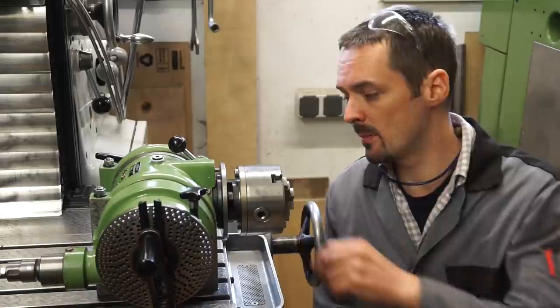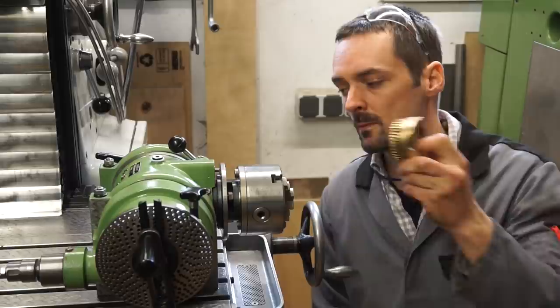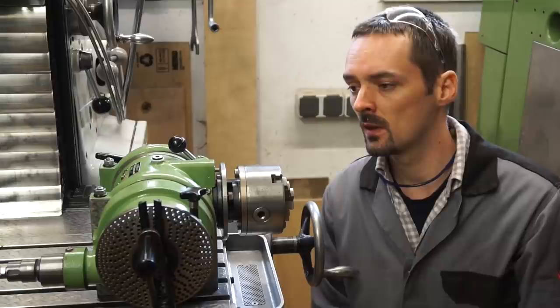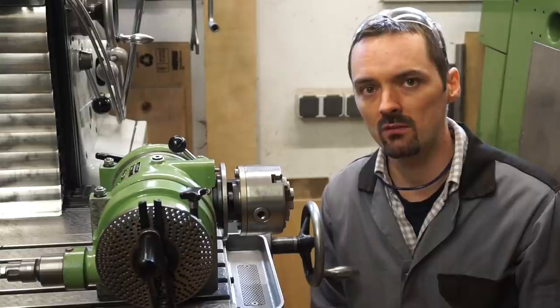From the last episode you may remember that this dividing head had a severe wear issue on its worm wheel, which was caused by very nasty corrosion spots on its worm. A result of the former owners not tending the oil filling in this dividing head very much I guess.